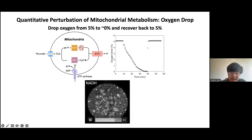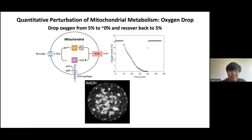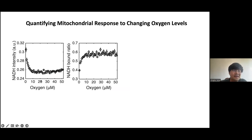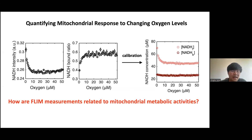This shows that NADH is responding to this metabolic perturbation of oxygen drop. We can quantify this response by measuring the NADH intensity as well as the NADH bound ratio obtained from FLIM fitting — the bound ratio is bound NADH divided by free NADH — and this quantity varies as a function of oxygen, showing a sensitive response. With calibration, we can convert these quantities into absolute concentrations of free NADH and enzyme-bound NADH inside the oocytes, and plot them as a function of oxygen.